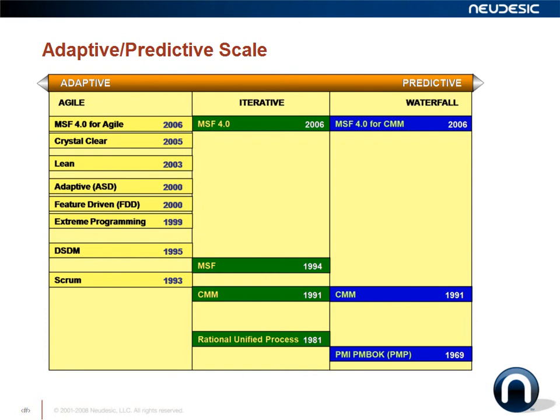There are many different models that fall under the adaptive umbrella. This slide shows the continuum from predictive methodologies all the way to adaptive. On the predictive side, you'll see things like CMM, which came out in 1991, with a CMMI and newer versions following. In 1969, PMI introduced the PMBOK, which laid out project management best practices often used in predictive or waterfall types of projects.